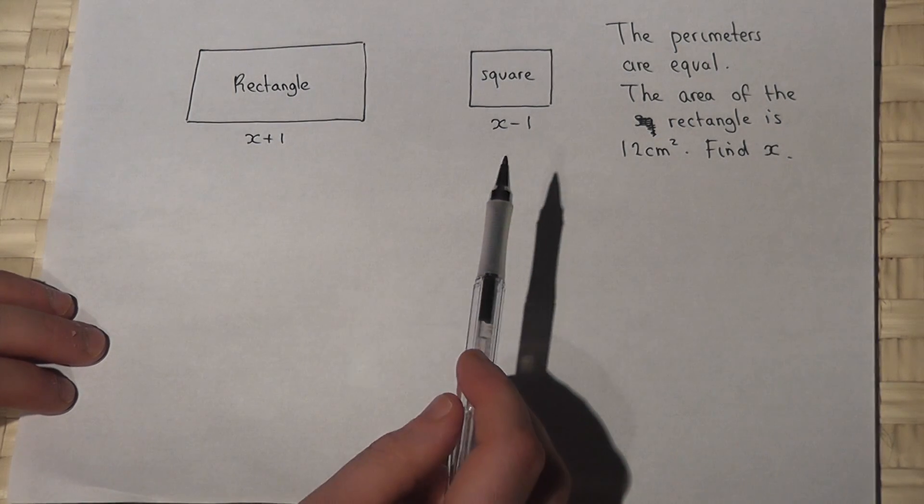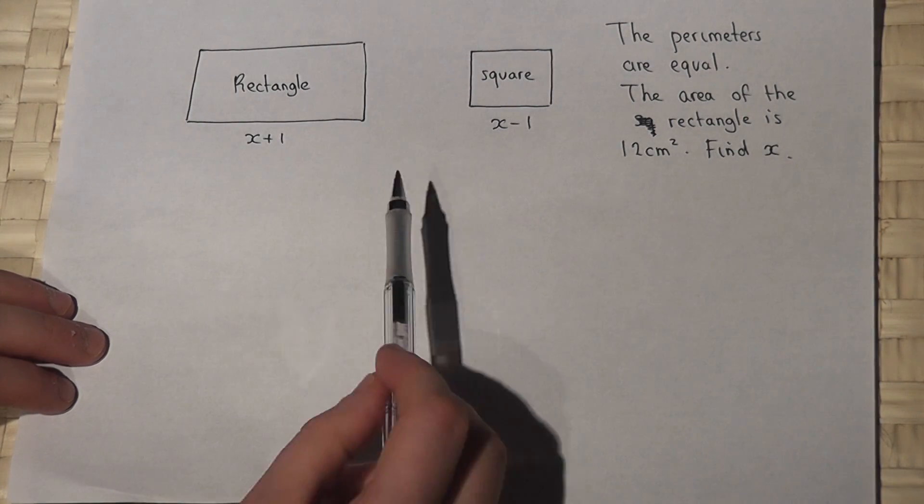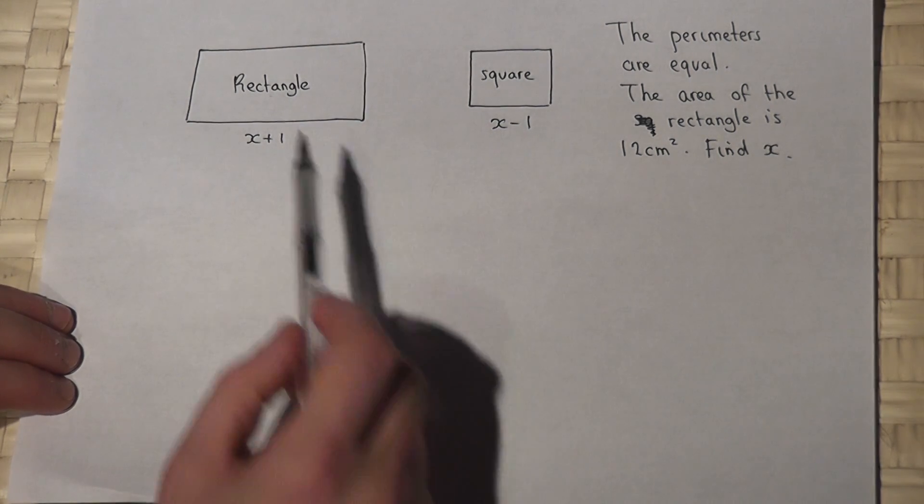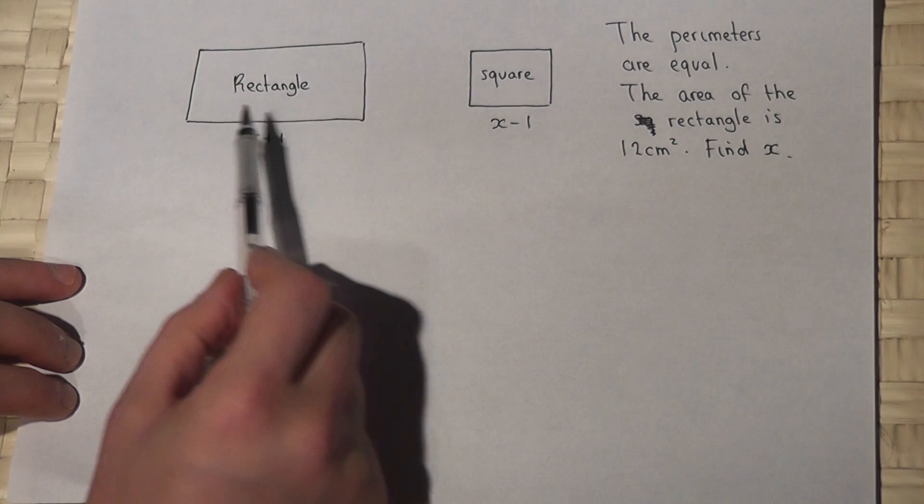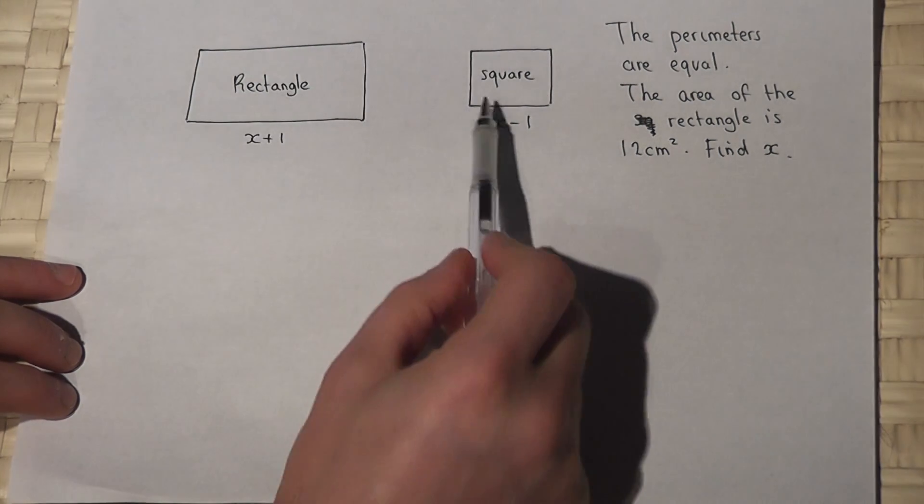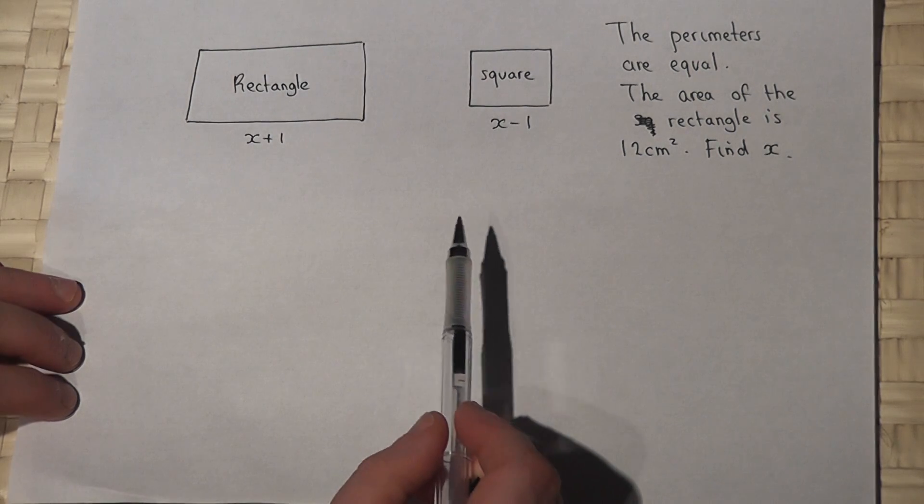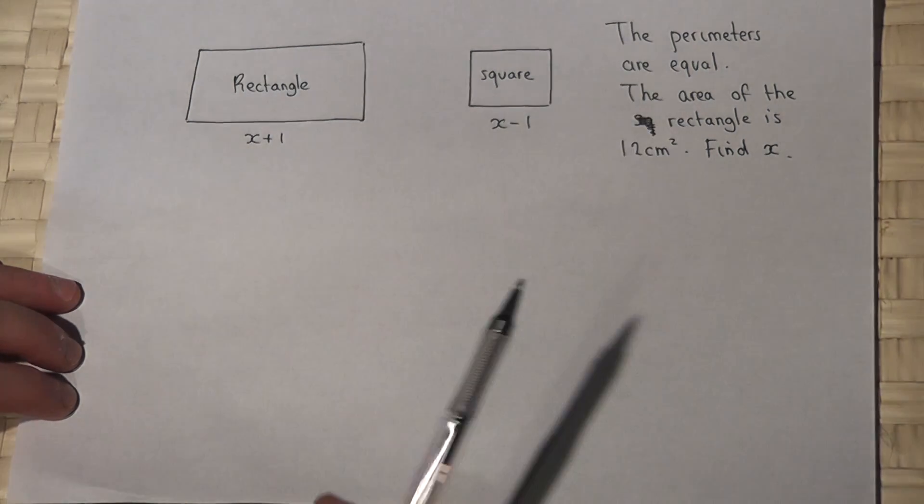This is a nice problem involving algebra, area and perimeter. We're given a rectangle with a length of x plus 1 and a square with a side length of x minus 1, and we're told that the perimeters are equal.